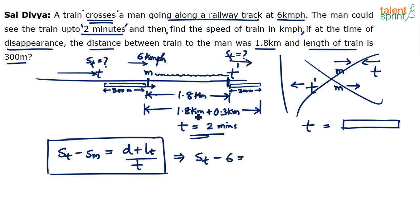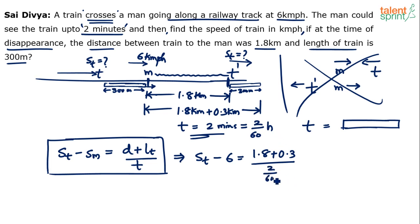Substituting the values: speed of train minus 6 equals (1.8 + 0.3) divided by (2/60). Distance is 2.1 kilometers; time is 2 minutes converted to hours, which is 2/60. So 2.1 × 60/2 = 2.1 × 30 = 63. Therefore, speed of train minus 6 equals 63, which gives speed of train equals 69 kilometers per hour.